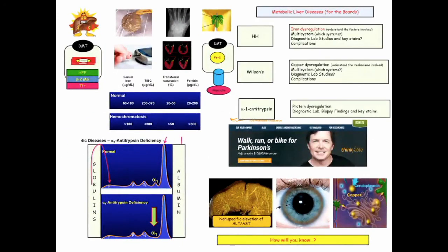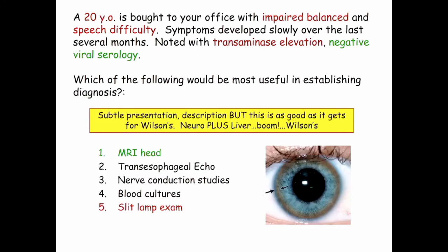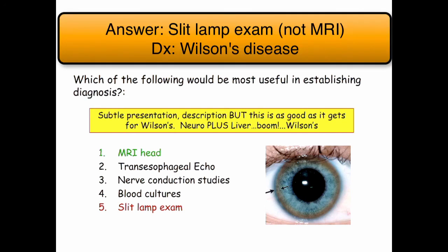So we covered the metabolic liver diseases: hemochromatosis, alpha-1, and Wilson's. Here's a great practice question that people historically miss: a 20-year-old with impaired balance and speech difficulty, symptoms developing slowly over several months, with transaminase elevation and negative viral serology — what would be most useful? The majority would take MRI of the head because of the neurologic symptom, but that doesn't account for the transaminase elevation. This is a presentation of Wilson's disease — the answer is slit lamp exam.